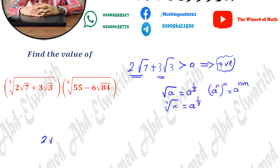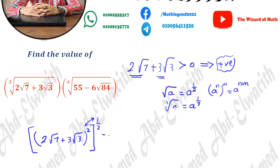We will take (2√7 + 3√3) and raise it to the power of 2, then take the square root — since squaring and taking the square root gives a net power of 1, the expression is unchanged. Expanding the square: the first term squared gives 2² × 7 = 4 × 7 = 28; the second term squared gives 3² × 3 = 9 × 3 = 27.